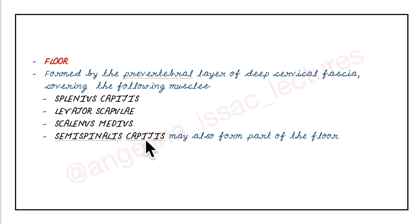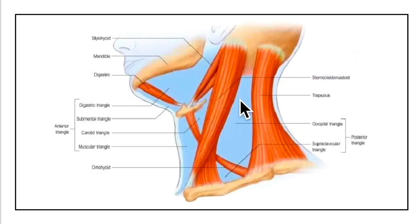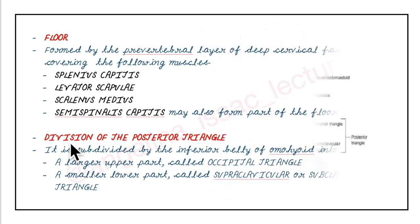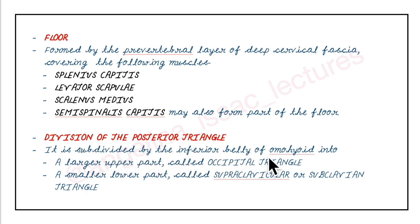Now let's look at the divisions of the posterior triangle of the neck. It is subdivided by the inferior belly of the omohyoid muscle into a large upper part called the occipital triangle, and a smaller lower part called the supraclavicular or subclavian triangle.